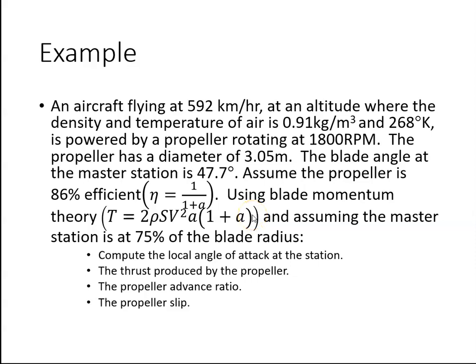An aircraft flying at 592 km per hour at an altitude where the density and temperature of air is 0.91 kg per meter cubed and 268 degrees Kelvin is powered by a propeller rotating at 1,800 rpm. The propeller has a diameter of 3.05 metres. The blade angle at the master station is 47.7 degrees. Assume the propeller is 86% efficient. Using blade momentum theory and assuming the master station is at 75% of the blade radius, compute the local angle of attack at the station, the thrust produced by the propeller, the propeller advance ratio, and the propeller slip.